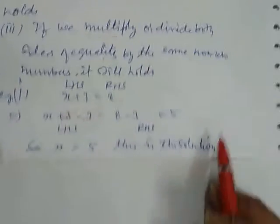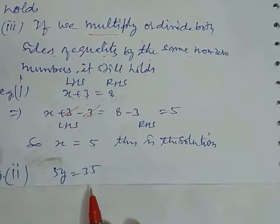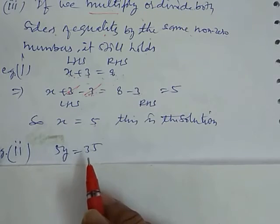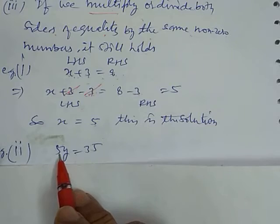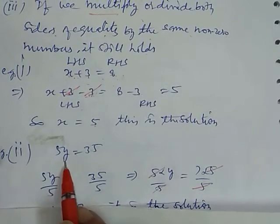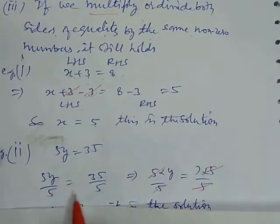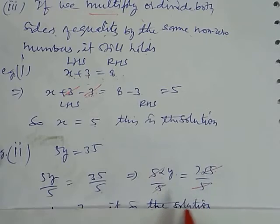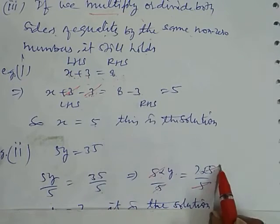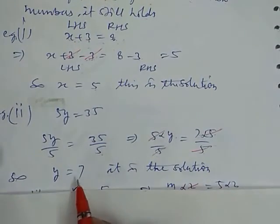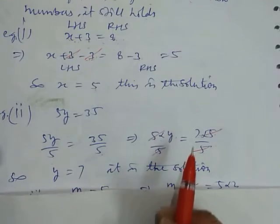Now let's take another example: 5y equals 35. Here, the numeral is multiplied with the variable, but we want to separate the numeral from the variable. So we divide both sides by 5. This gives us 5y over 5 equals 35 over 5. The 5 cancels out and we get y equals 7. This is the solution. We can find the solution by dividing or multiplying.